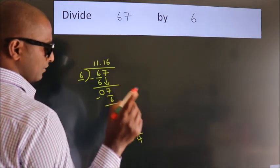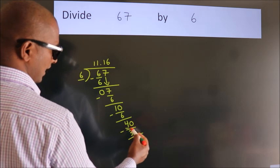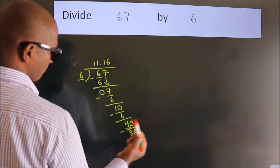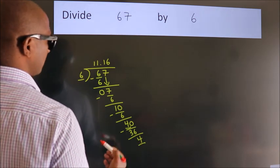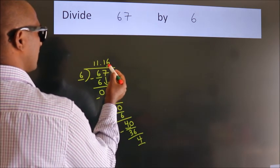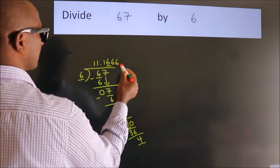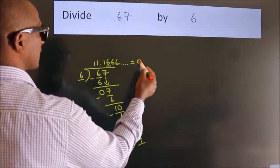Now you observe. We had 4 here and we got 4 again. That means this number keeps on repeating. So this is our quotient.